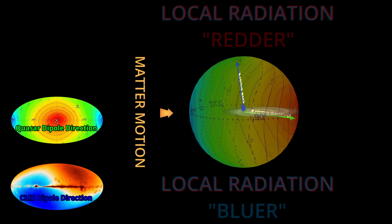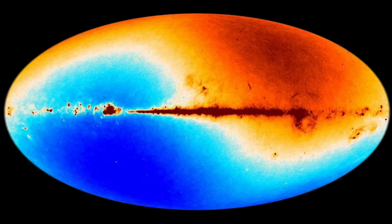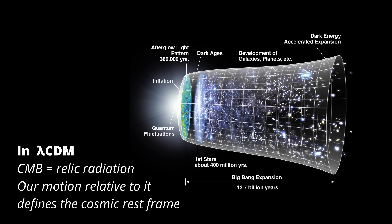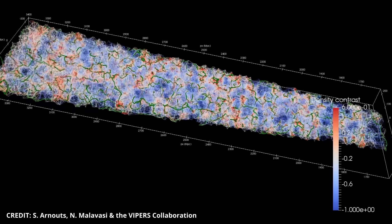And that conclusion cuts deep. The CMB dipole is supposed to be pristine, the anchor for the lambda-CDM model. Yet, if it isn't motion, then the cosmic reference frame collapses and with it the foundation on which galaxy surveys and large-scale maps have been built.